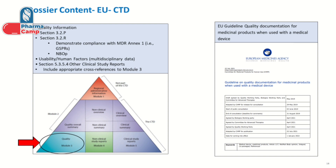We then submit all this information as part of the technical documentation to the notified body, which will assess and evaluate it to provide their opinion. Once we get the notified body opinion, we include this information in Module 3 of the dossier — specifically section 3.2.r. There is specific guidance provided by EMA on which information should go in which part of the dossier. Similar to the US, the device part information also needs to be included in relevant CTD sections — for example, development in the development section, stability in the stability section (pH section), and so on.